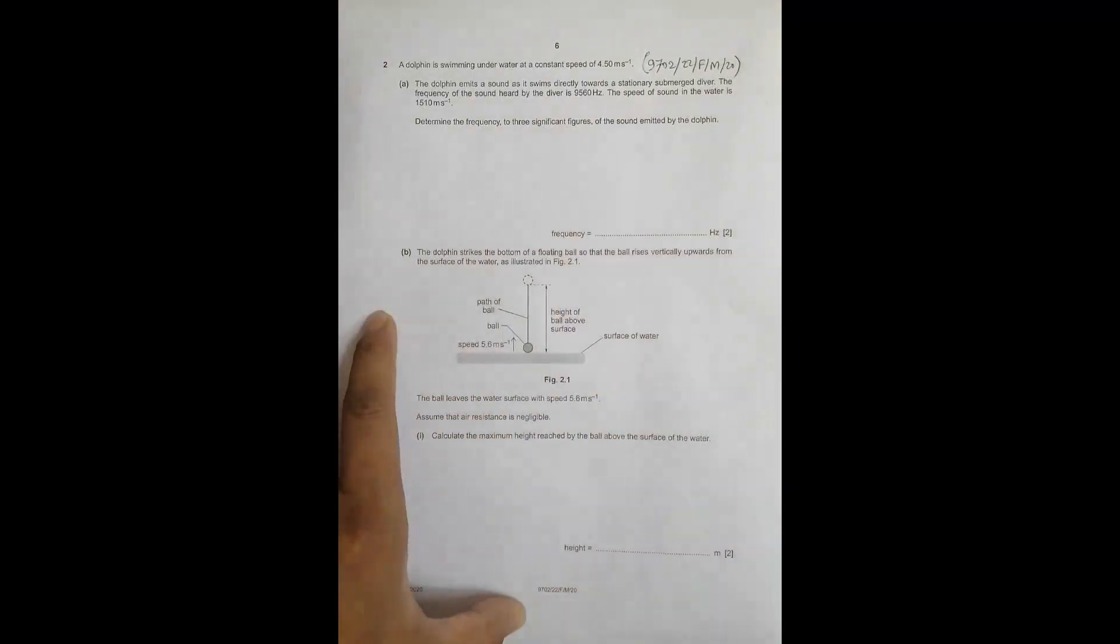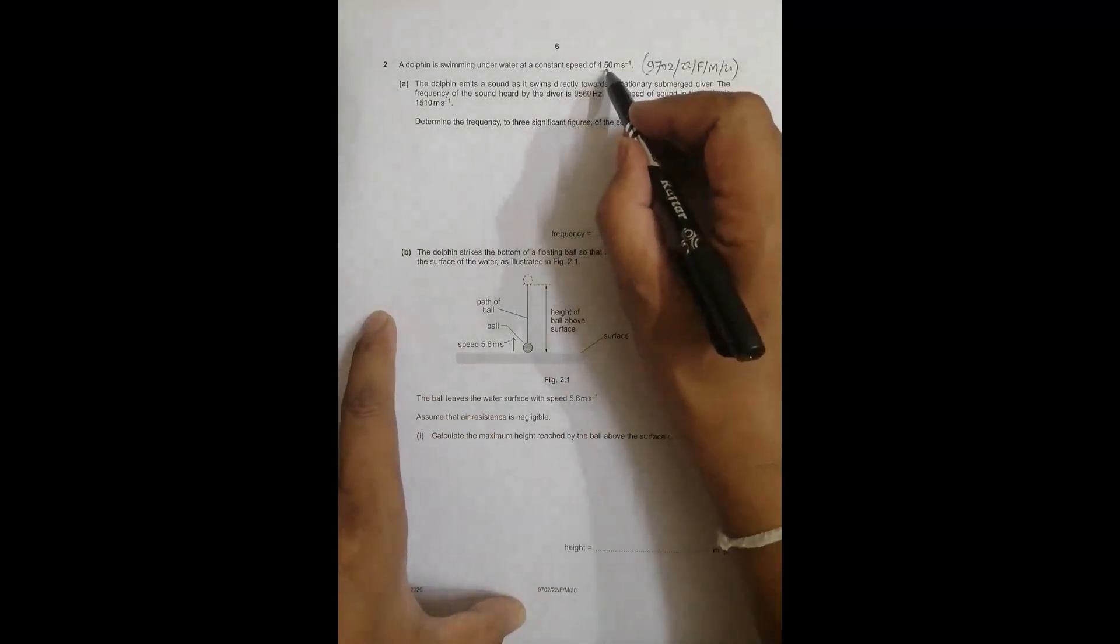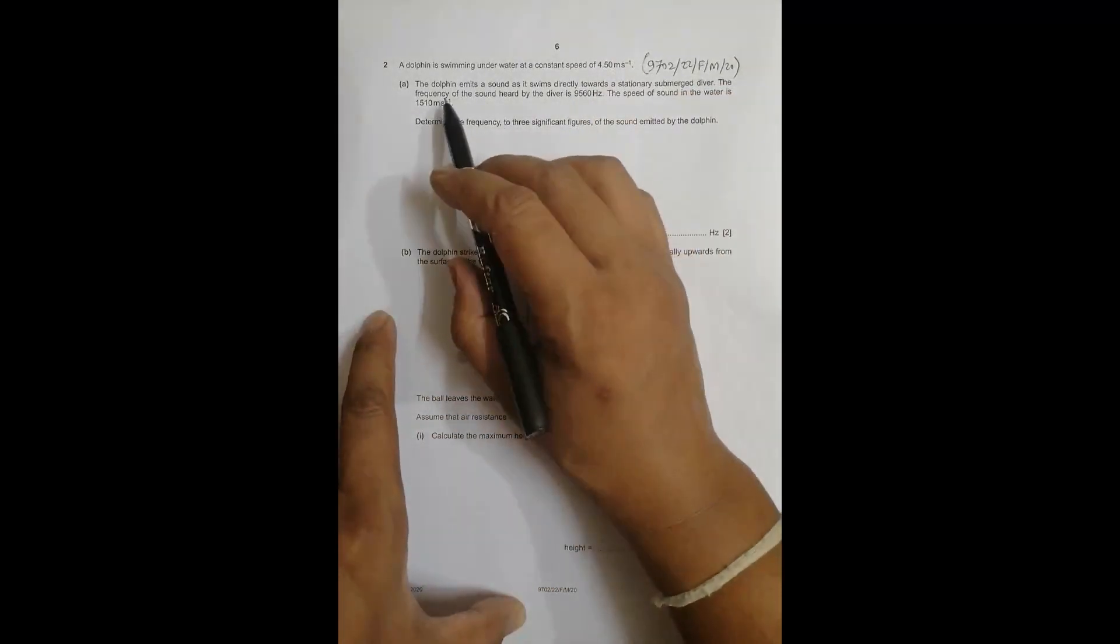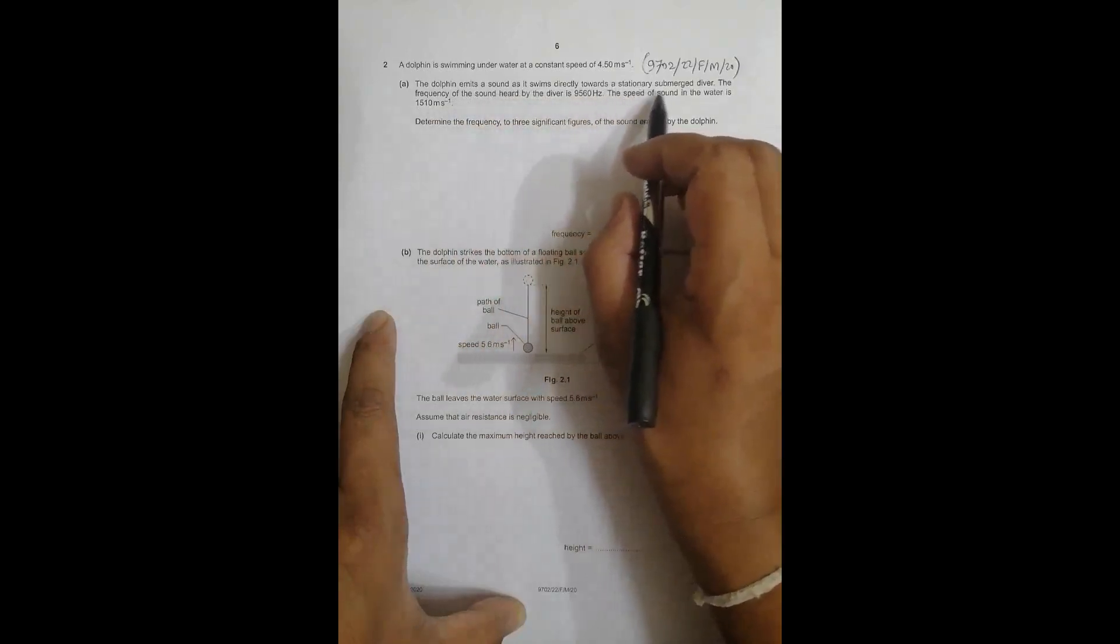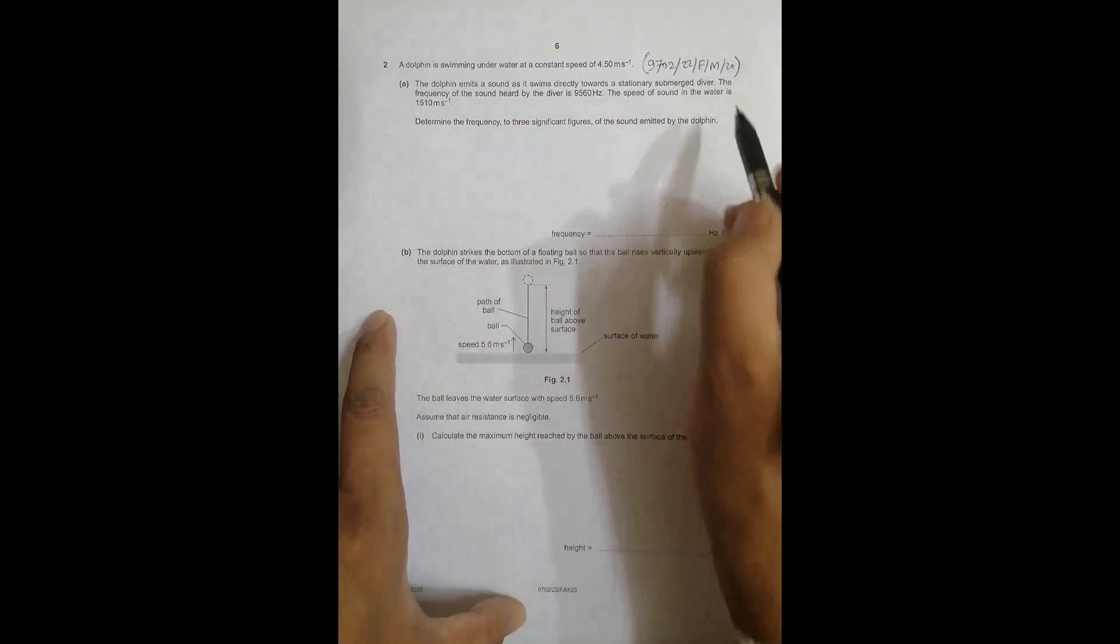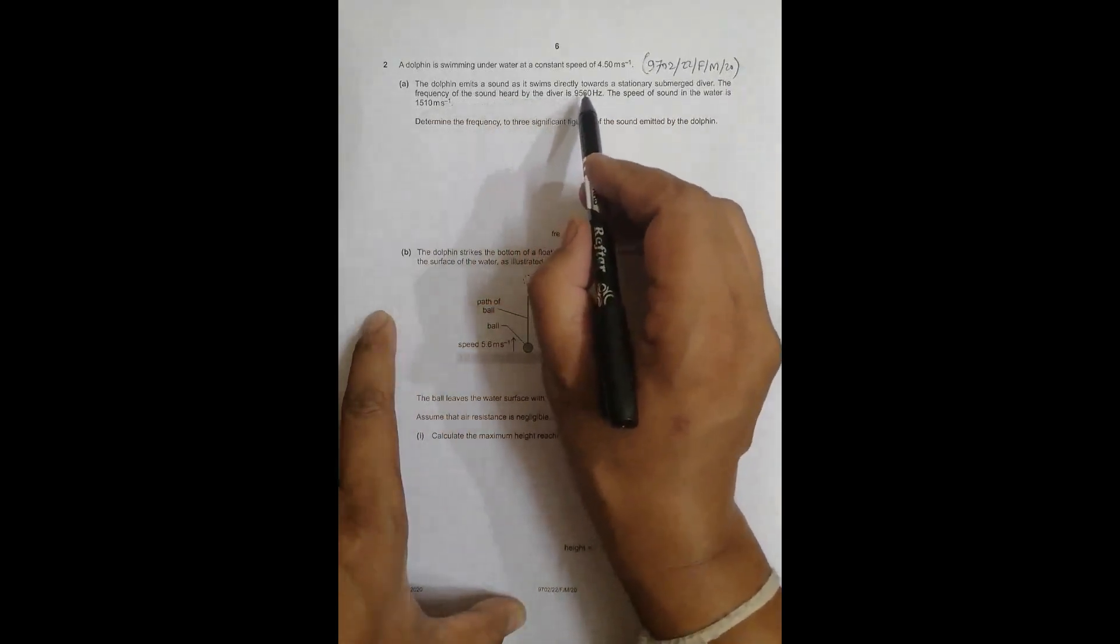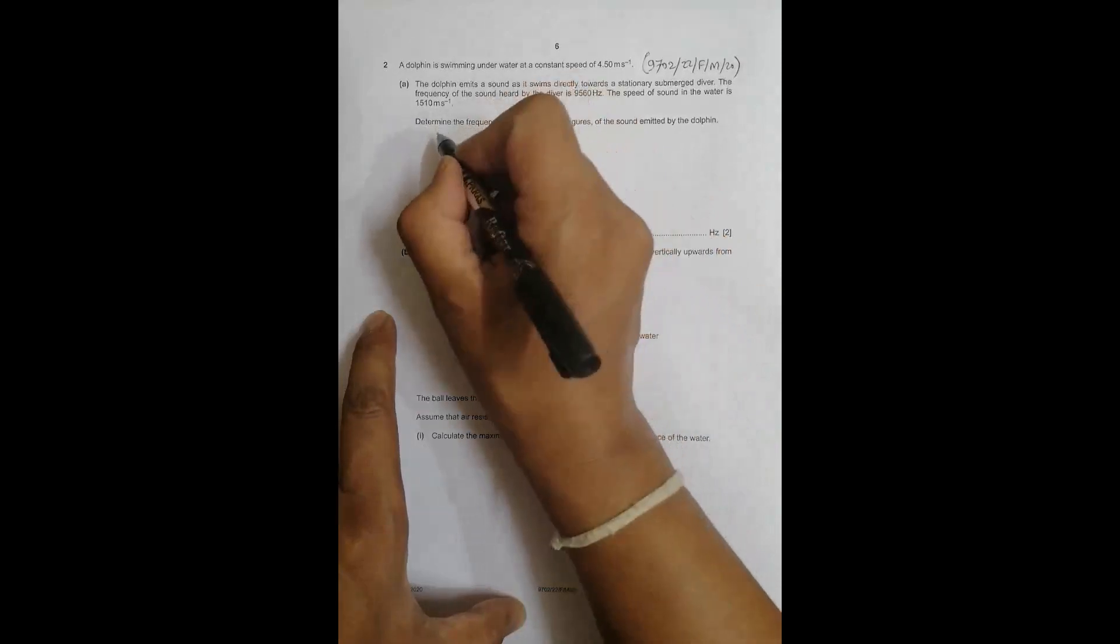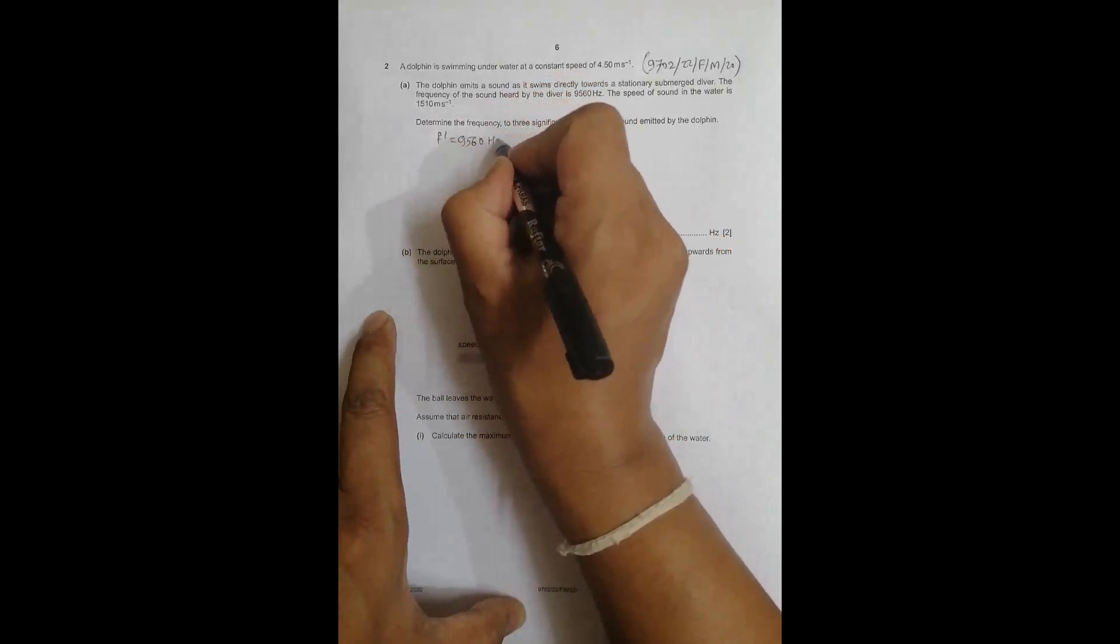A dolphin is swimming underwater at a constant speed of 4.50 meters per second. The dolphin emits a sound as it swims directly towards a stationary submerged diver. The frequency of the sound heard by the diver is 9560 hertz, so F prime equals 9560 hertz.